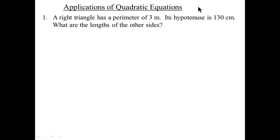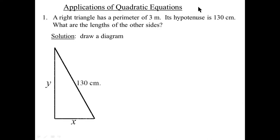Example. A right triangle has a perimeter of 3 meters. Its hypotenuse is 130 centimeters. What are the lengths of the other sides? Solution: draw a diagram. There's a diagram of a right triangle with a hypotenuse of 130 centimeters. And Pythagoras tells us that the square on the hypotenuse is the sum of the squares of the other two sides.